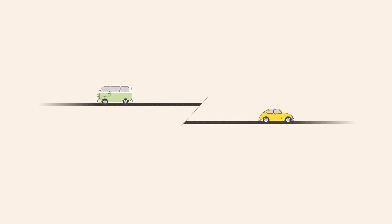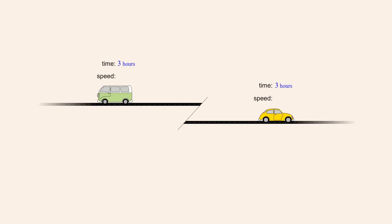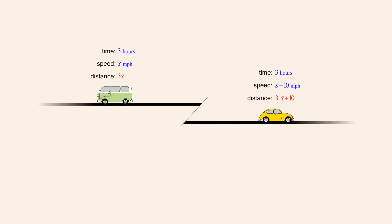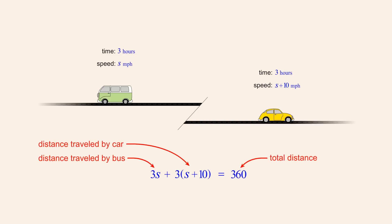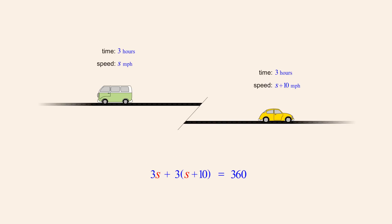The second example involved two vehicles traveling at constant speeds. We knew the time traveled by each vehicle, but we did not know their speeds. However, we knew the two speeds were related, since one speed was 10 miles per hour greater than the other, so we could use a single variable to create expressions for both speeds. We then wrote expressions for the distances traveled by each vehicle as time times speed, equated the sum of these distances to the known total distance, and solved the resulting single-variable equation to find both speeds.